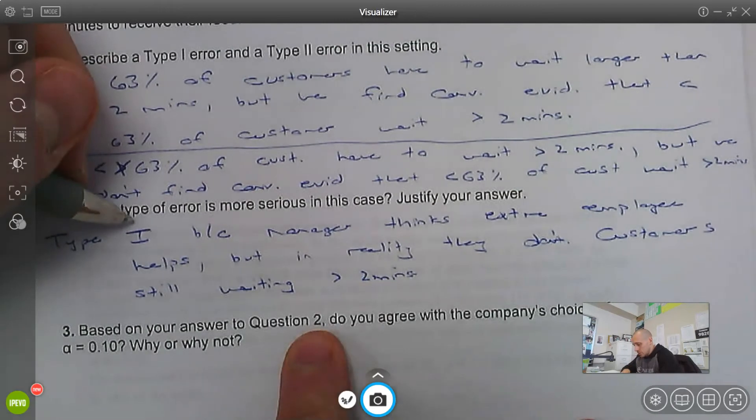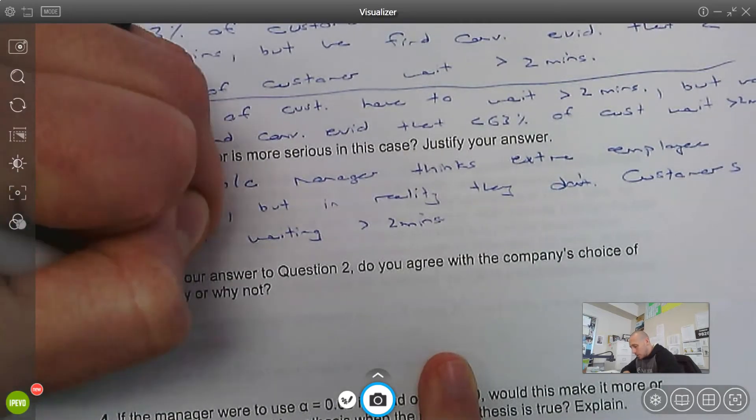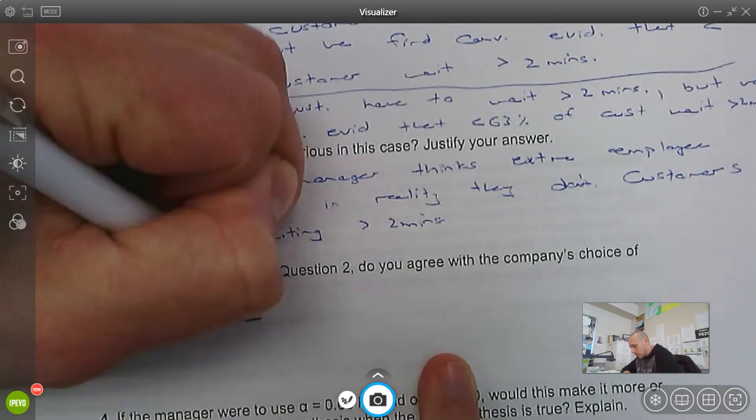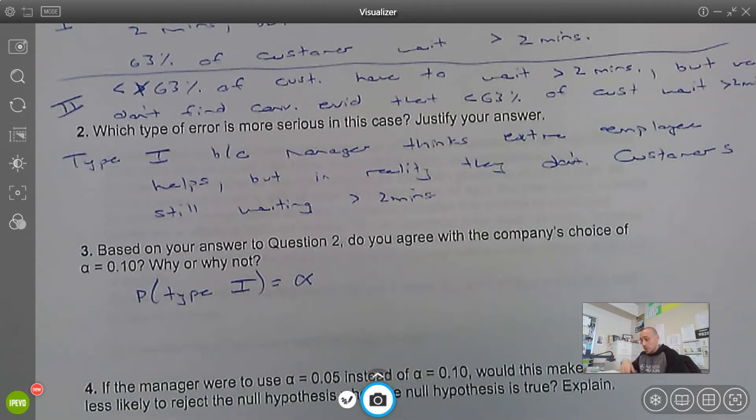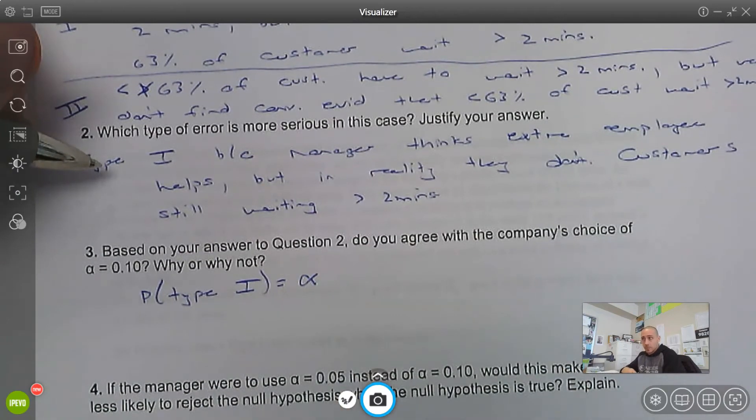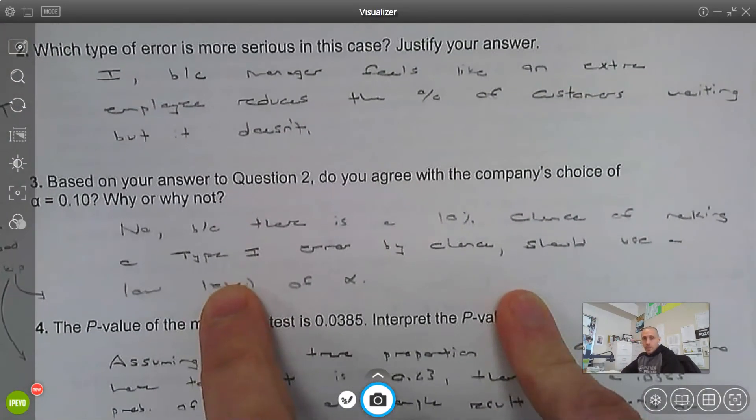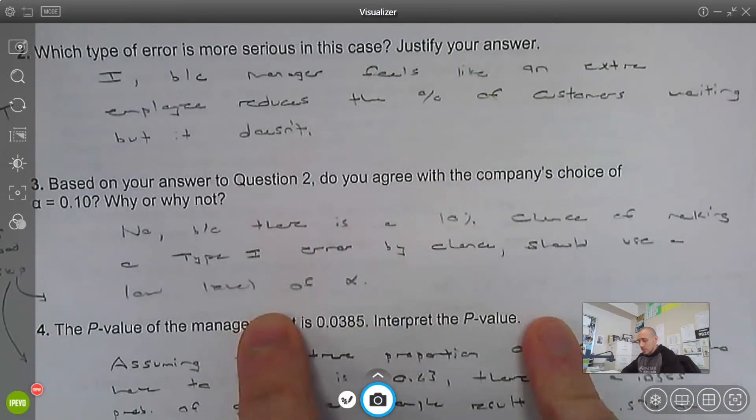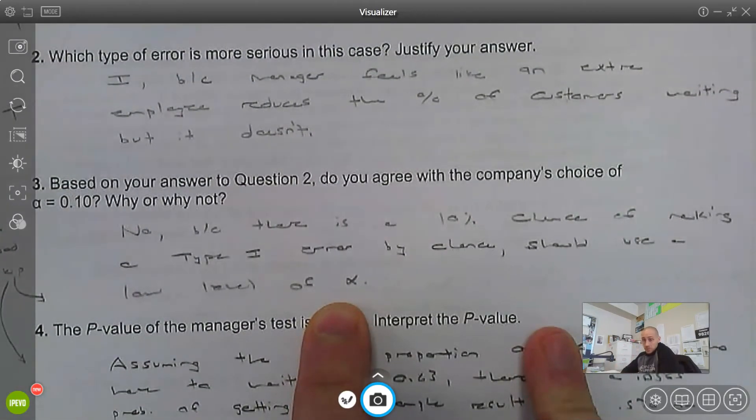Based on your answer to question 2, do you agree with the company's choice of alpha equals 0.1? Remember, the probability you make a Type 1 error is equal to alpha, which is your significance level. So we just said that's really bad. So no, I don't think this is a good idea. We would want a significance level lower, like 5% or 1%. So no, because there's a 10% chance of making a Type 1 error. We should use a lower level of alpha. We want to minimize a Type 1 error because we just said it was bad.